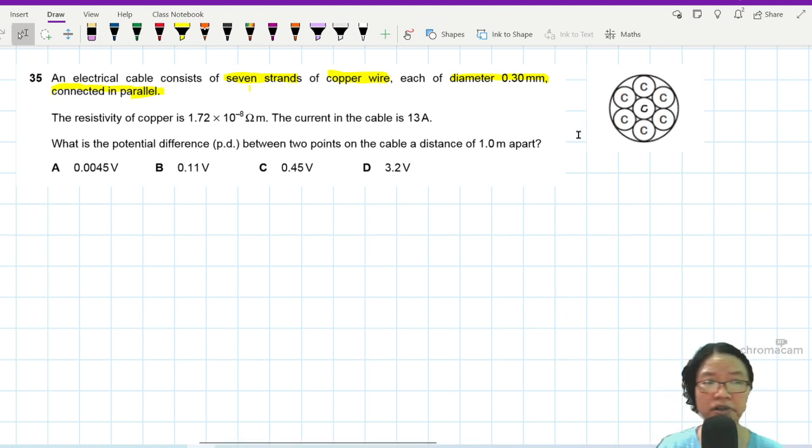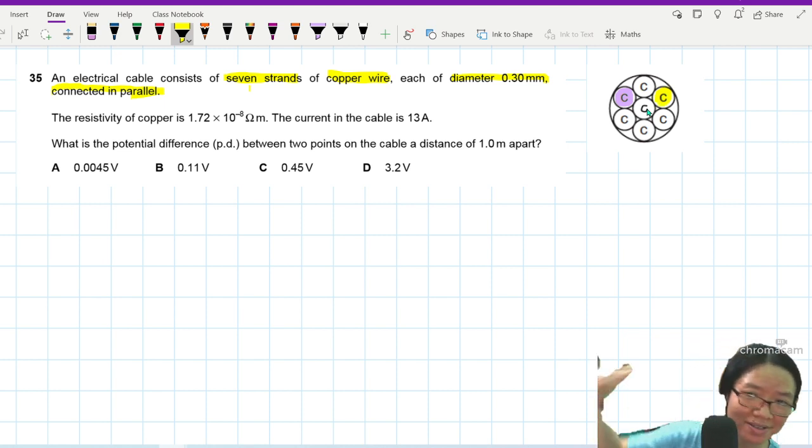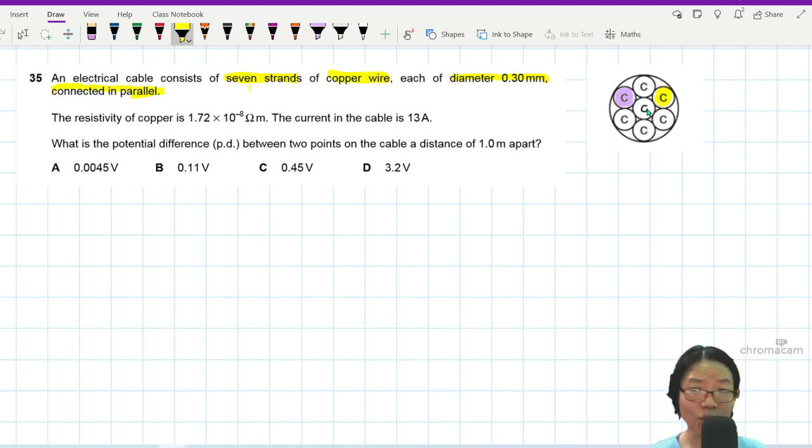Your seven strands of copper wire in parallel will be like this, because whatever current passes through this strand, it will not have to pass through this strand. It's like you have seven roads, so you don't have to go through all seven of them. One of them is good enough. They are not connected in series.